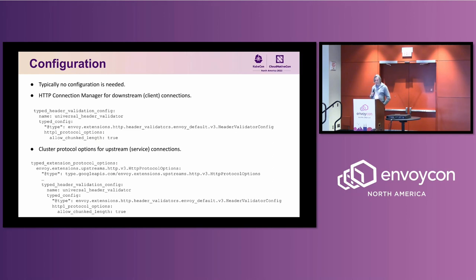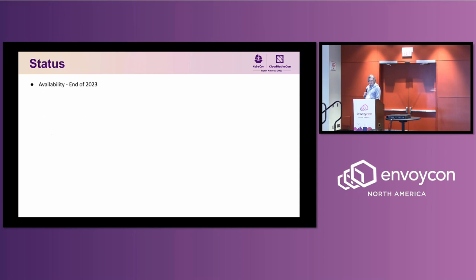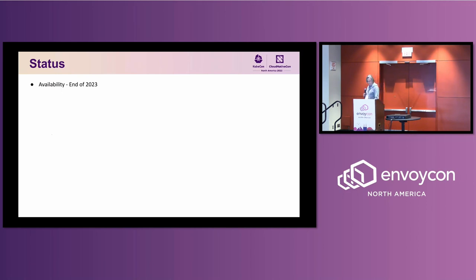For configuration, we don't expect any configurational changes to be needed. Envoy will take your existing protocol validation options and move them to UHV. But if you do have to change something, there is a new configuration option in HTTP Connection Manager for downstream connections and cluster protocol options for upstream connections. The availability was planned earlier, but is now expected at the end of 2023. That's the end of my talk.